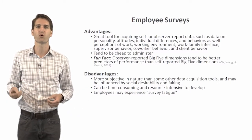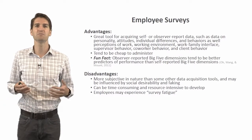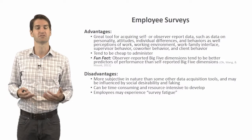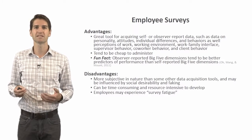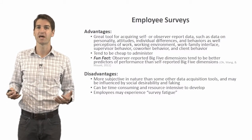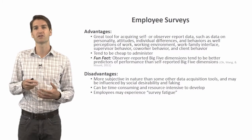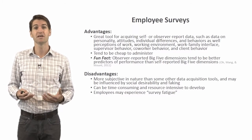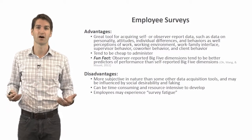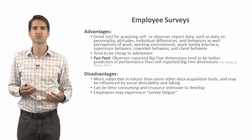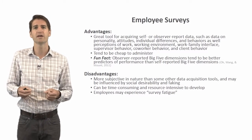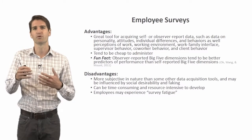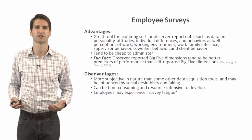What this meta-analysis found, across a number of different studies, is that observer-reported Big Five dimensions tend to be better predictors of job performance than self-reported Big Five dimensions. This suggests that sometimes others can recognize our personality with greater accuracy than we can ourselves — so the source of the survey response and the target of those responses really matters.